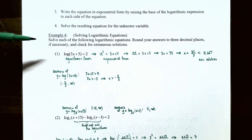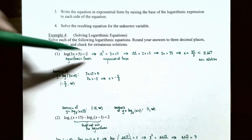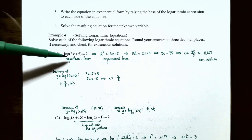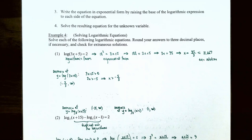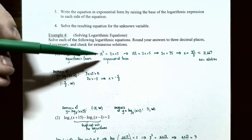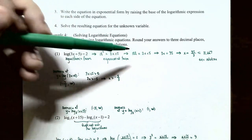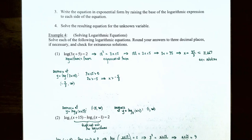Example 4, Problem 1: solve log₁₀(3x+5) = 2. The right side is a constant, so convert from logarithmic form to exponential form. Since the base is 10, raise 10 to each side: 10² = 3x+5. So 100 = 3x+5. Subtracting 5 gives 3x = 95, and dividing by 3 gives x = 95/3 ≈ 31.667.